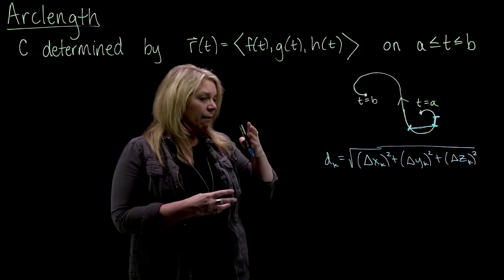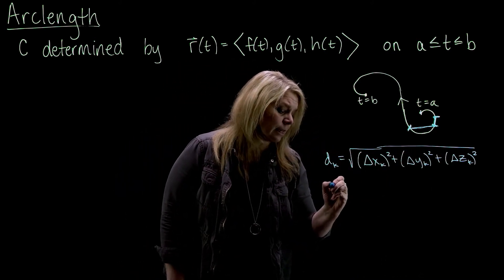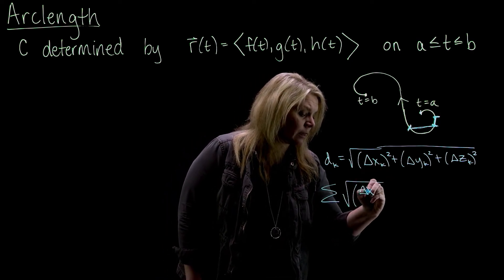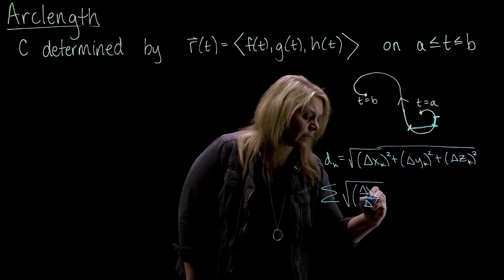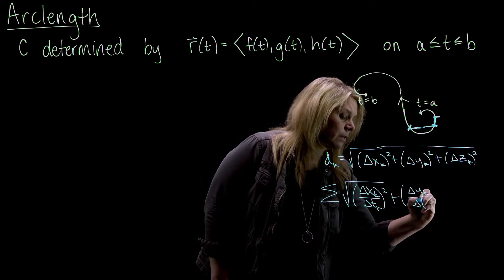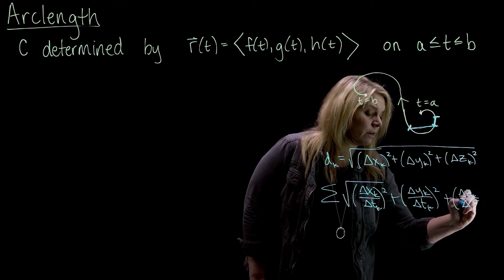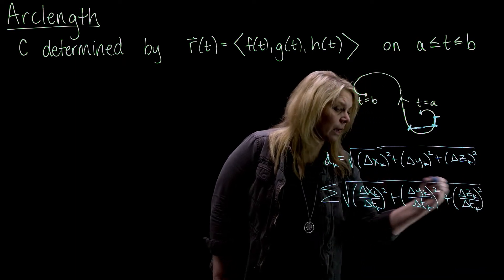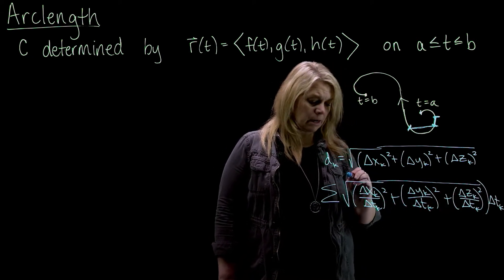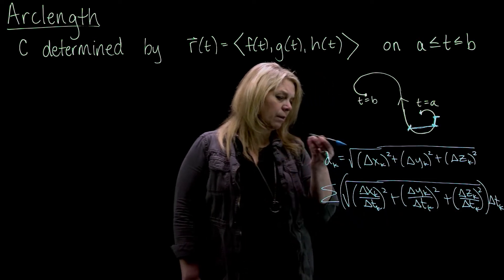I'm going to factor out a delta t, the quantity squared, from here. So you did this in calculus two, whether you wrote it down or not. You'll have delta x over delta t squared, and delta y over delta t squared, and delta z over delta t squared, and then a delta t factored out from that. So that delta t is outside the radical here. You can think algebraically, if I distribute this back in, I would square that and distribute that back through, and I would get what I have here.